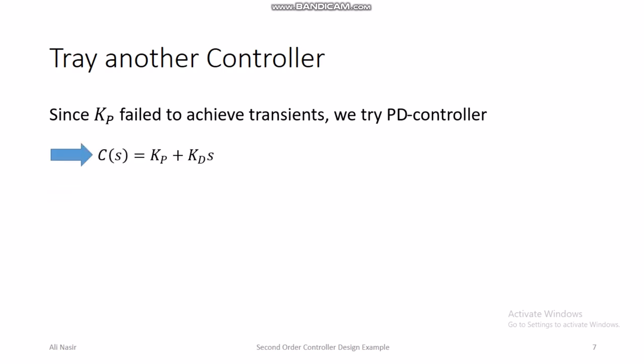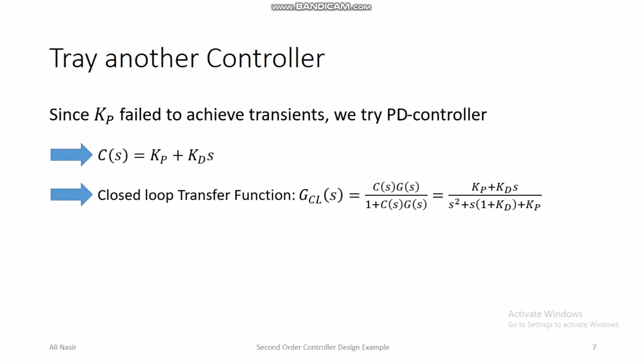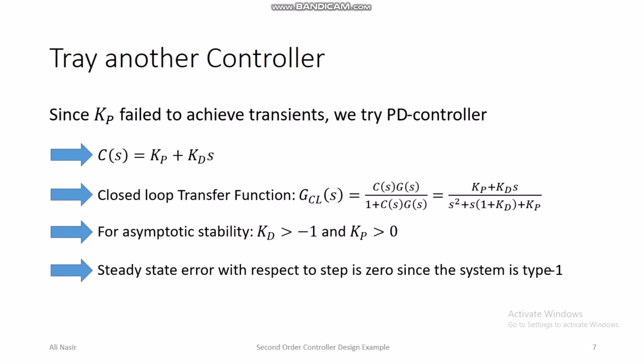The PD controller is C(s) = kp + kd·s. The closed loop transfer function becomes (kp + kd·s) / [s² + s(1 + kd) + kp]. For asymptotic stability via Routh-Hurwitz, we need kd > −1 so the coefficient of s is positive, and kp > 0. Steady state error is still zero because the original plant remains Type 1 with the PD controller, so steady state error with respect to step input remains zero.